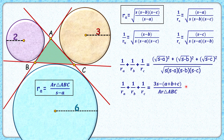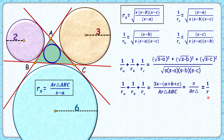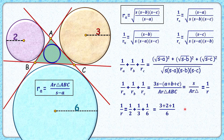Since a + b + c = 2s, the numerator simplifies to s and the denominator is the area of the triangle. Considering the incircle with inradius r, we know Area = r·s, so 1/r = s/Area. Therefore 1/r = 1/ra + 1/rb + 1/rc. Putting in the excircle radius values 2, 3, and 6: 1/r = 1/2 + 1/3 + 1/6 = 6/6 = 1, so r = 1 centimeter. The inradius of this triangle is 1 centimeter.